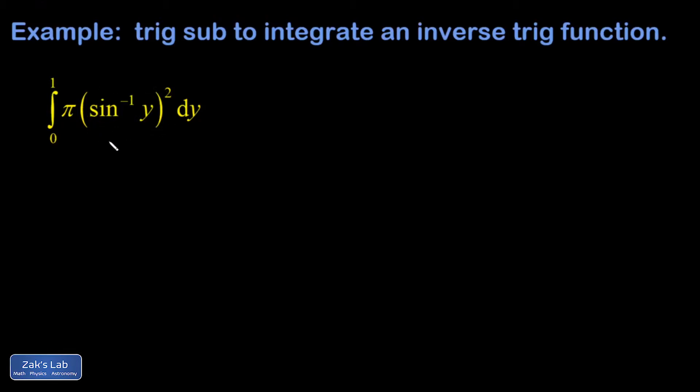When I see an inverse sine function inside an integral, the way to simplify this is to do a trig substitution where that variable y is the sine of some angle. The inverse sine and sine will undo each other, hopefully giving us an integral that's easier to comprehend. So let y equal the sine of some angle theta.